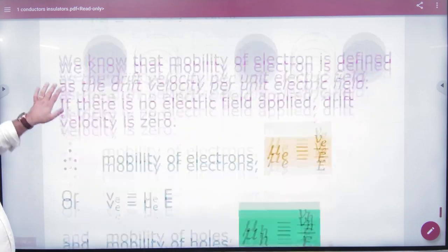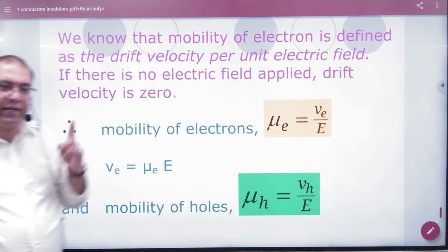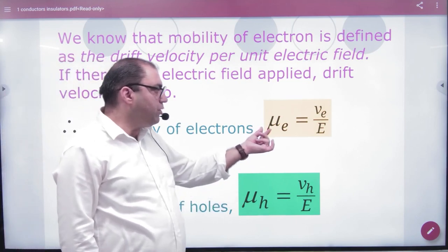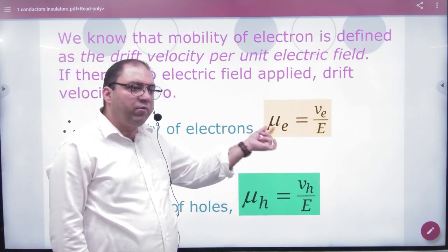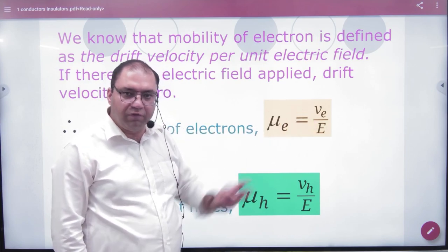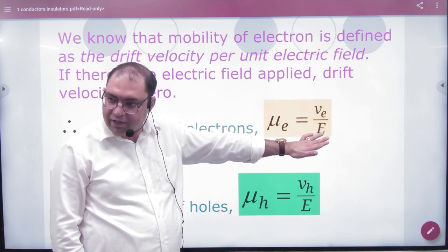So next step: in current electricity we have a definition of mobility. Mobility represented by mu, so electron's mobility mu is velocity of drift by applied electric field E, velocity of drift VE by applied electric field E.